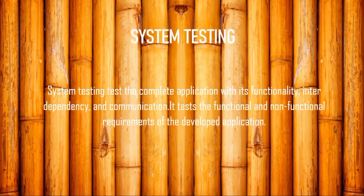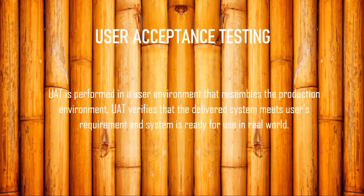Next comes system testing: the complete application and all functionality of the project is successfully executed, and the next responsibility is to successfully install the project at the customer's location — that is the role of system testing. If a project is designed and submitted to the customer who expects the software to be installed on their device, that is user acceptance testing. The user environment resembles the production environment, verifying that the delivered system meets user requirements and the system is ready for the real world.